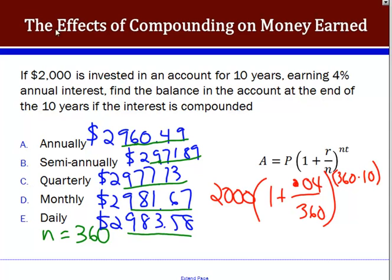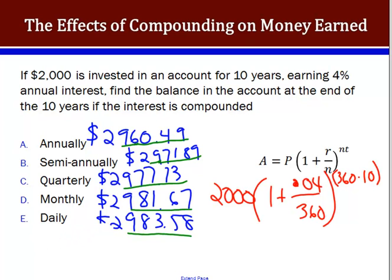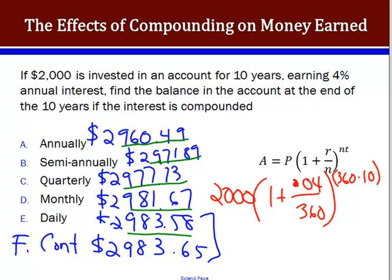Writing in the continuously compounded result: $2,983.65. Looking at the difference across all compounding methods — it's not a significant difference with this small amount, but with millions invested it could be a few hundred dollars. From daily compounding ($2,983.58) to continuous ($2,983.65), there's only about a seven-cent difference. After a certain point, increasing the compounding frequency doesn't make that much of a difference.